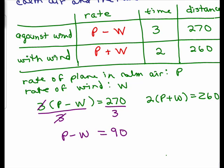You could have written 3P - 3W = 270, that's fine. I'm just trying to make it easier. What can we do over here? Since two happens to go into 260, I may as well make this equation easier too by dividing both sides by two, and I get P + W = 130.